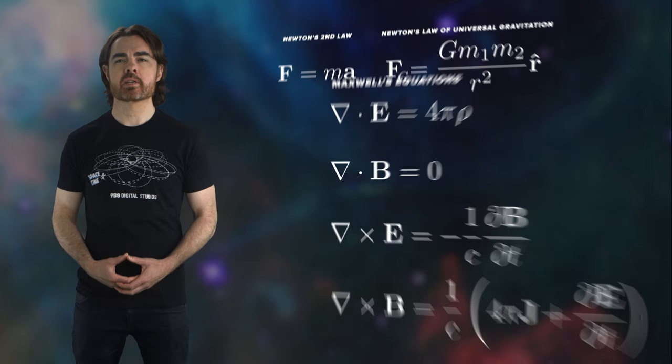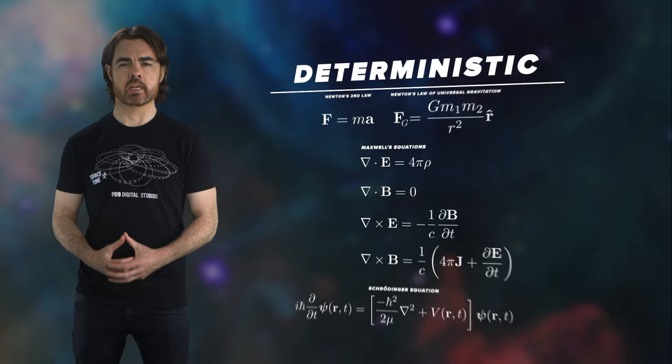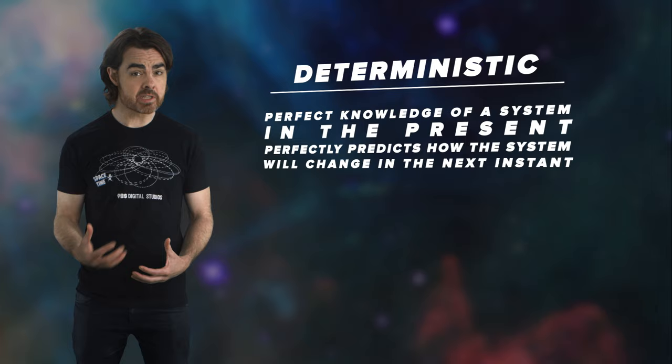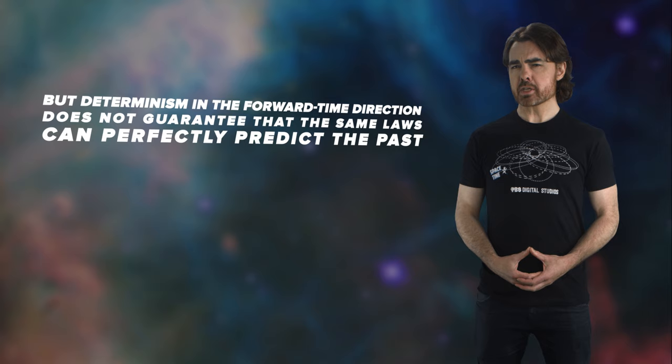The laws of physics are equations of motion. They are mathematical rules that dictate how systems evolve in time. Newton's equations for classical mechanics, Maxwell's equations for electromagnetism, and the Schrödinger equation for quantum mechanics. These laws can be used to predict how the universe will evolve into the future. They are deterministic. Perfect knowledge of a system in the present perfectly predicts how the system will change in the next instant, and the instant after that ad infinitum. But determinism in the forward time direction does not guarantee that the same laws can perfectly predict the past.